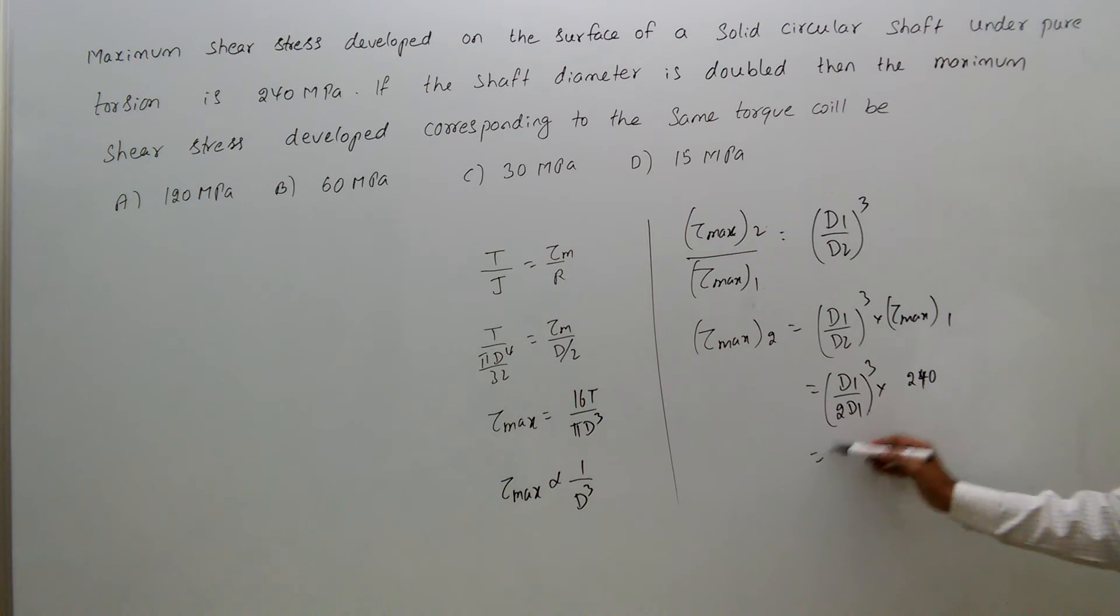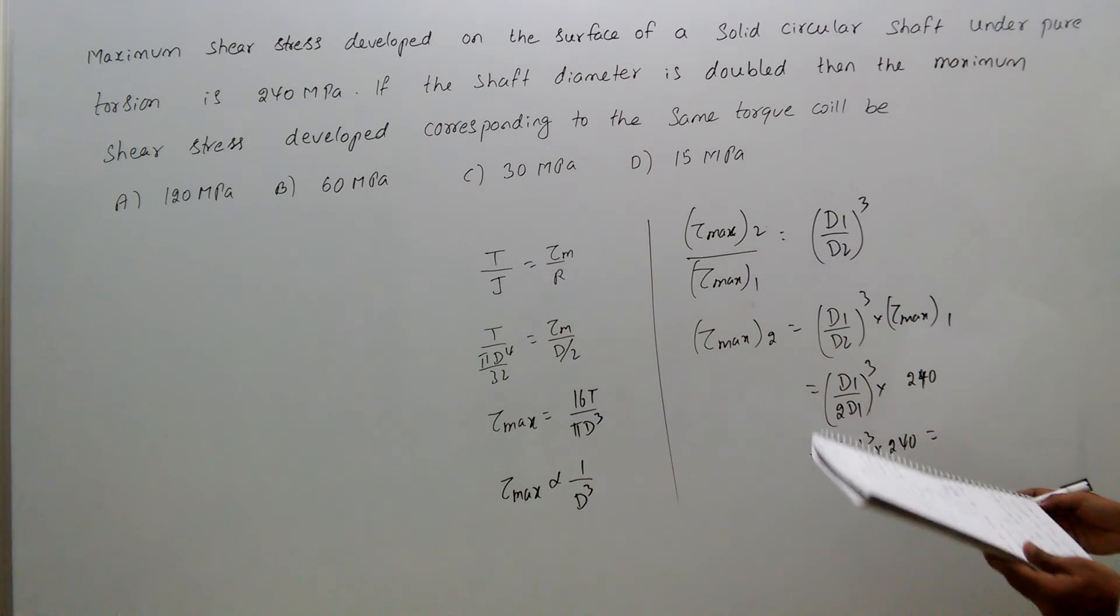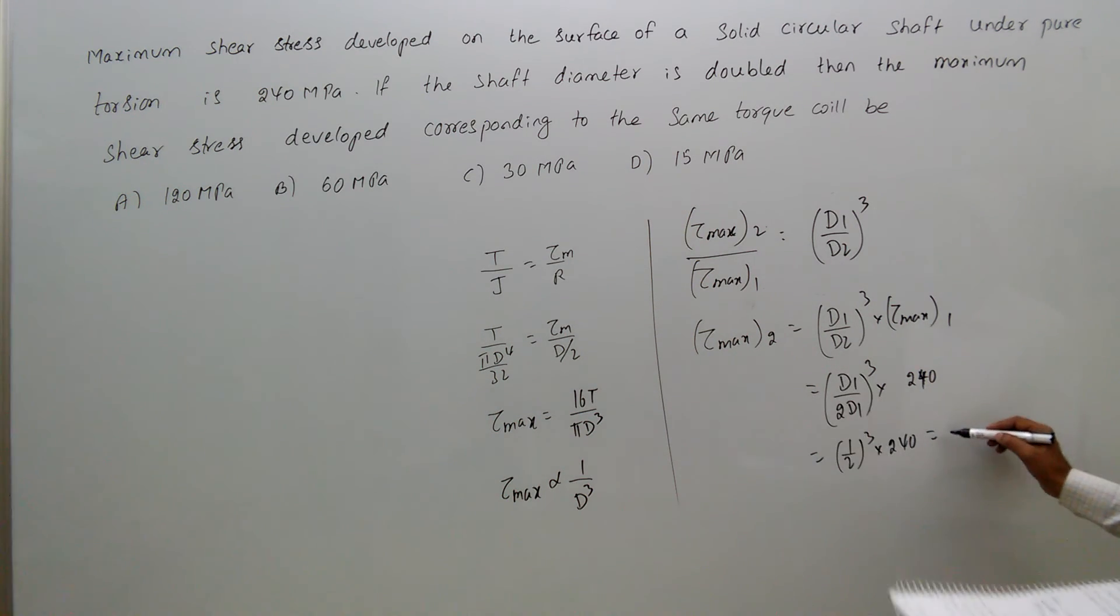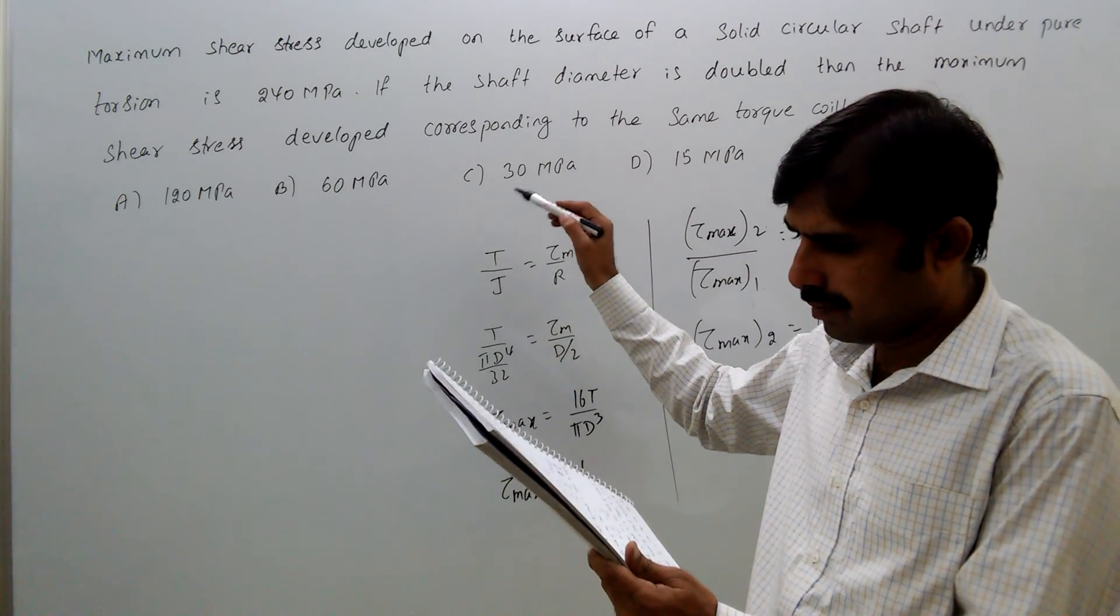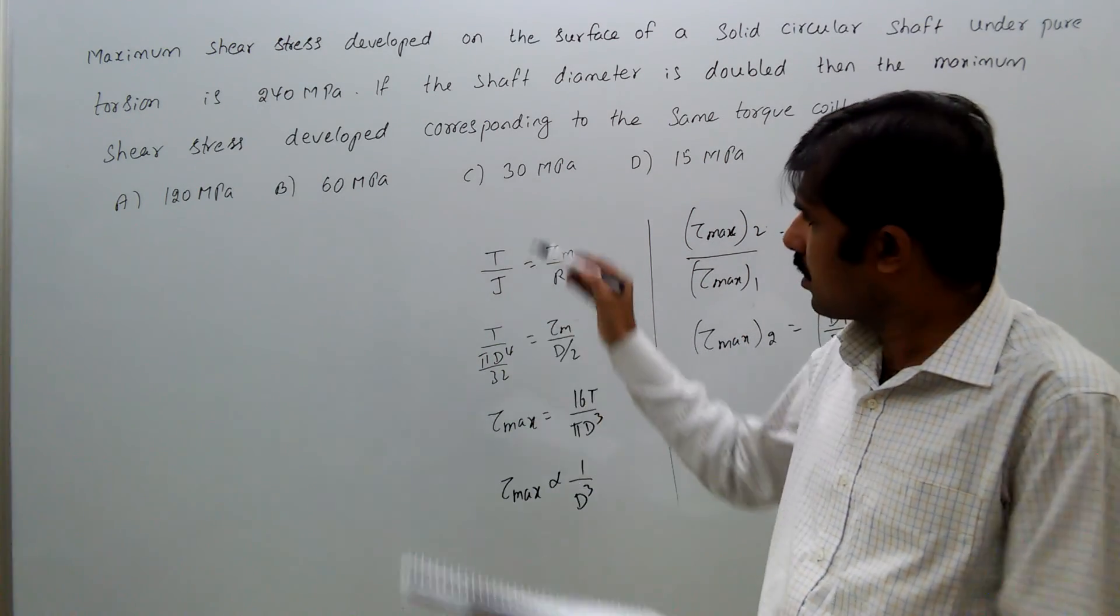That equals 240 by 8, which is 30 megapascals. So 30 megapascals is the answer. Option C is the answer.